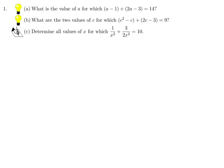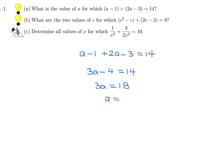What is the value of A for which A minus 1 plus 2A minus 3 is equal to 14? So A minus 1 plus 2A minus 3 equals 14, meaning 3A minus 4 equals 14, so 3A equals 18, and therefore A equals 6.